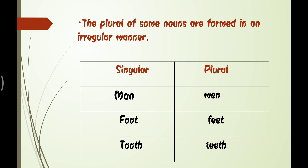Some nouns change in an irregular manner in the plural. We must remember these because they are irregular. For example, man becomes men, foot becomes feet, and tooth becomes teeth. When we say feet it means two feet; foot means one foot.